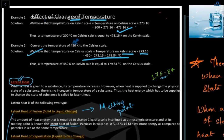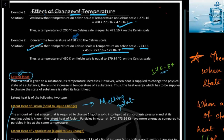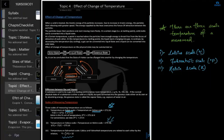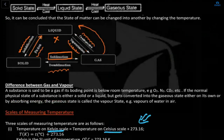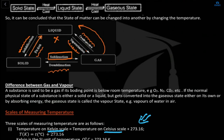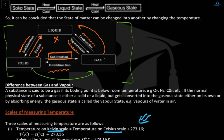In the last class we discussed the effect of change of temperature. If you are converting solid to liquid, this process is known as fusion, and the reverse process is known as solidification. Solid to gas is known as sublimation, and gas to solid is known as desublimation. Liquid to gas is known as vaporization, and back from gas to liquid is known as condensation.